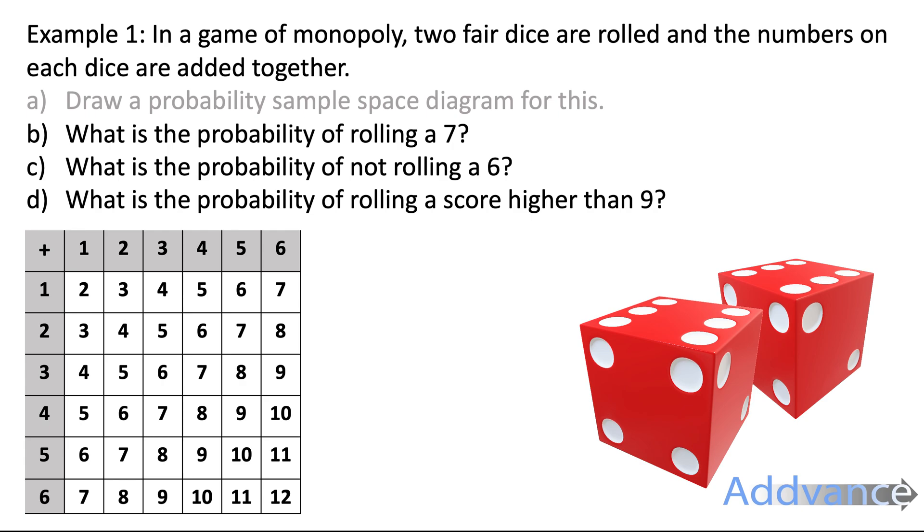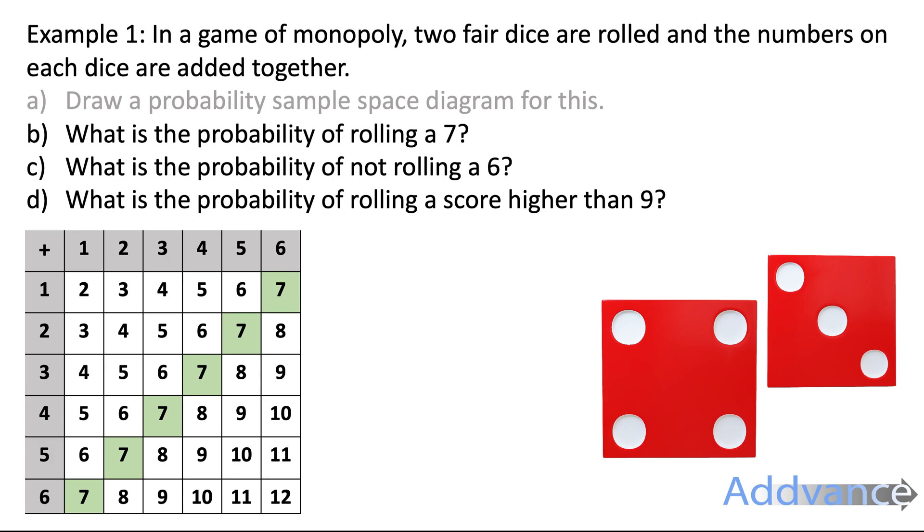That is a complete sample space diagram showing you all the possible scores you can get with two dice. Now, you should notice that some numbers occur more than others. So, let's look at the probability of scoring a 7.